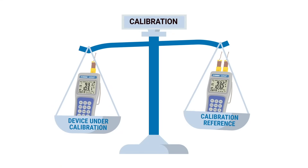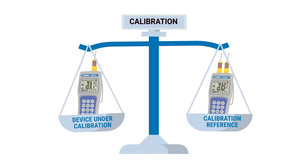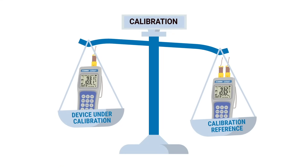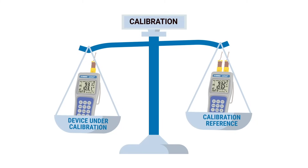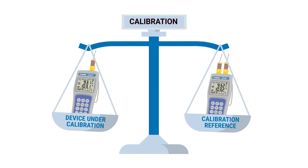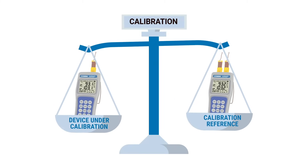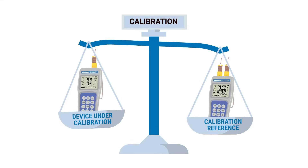Calibration is the comparison of a measurement value from a device under calibration with that of a known traceable calibration reference — typically a device that is more accurate than the unit being calibrated and with accuracy traceable to a recognized standard.